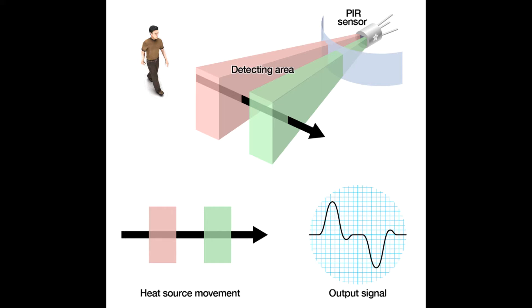The change in the amount of infrared radiation which happens when an object crosses its field of view results in a change in the voltage that is generated from its signal pin.